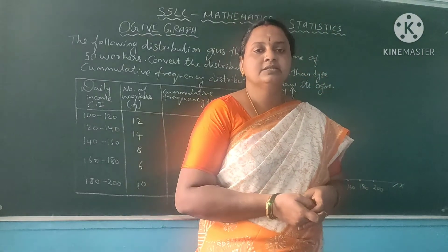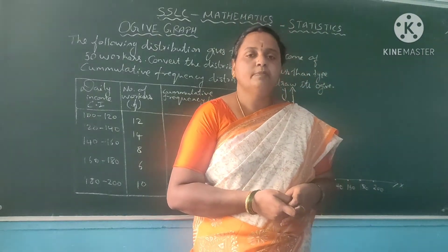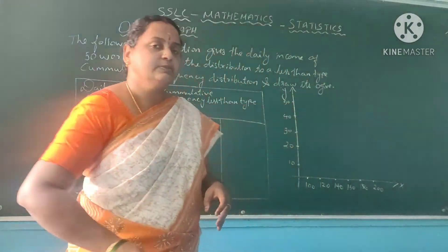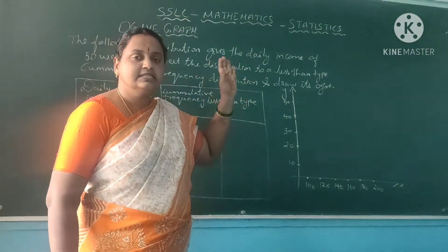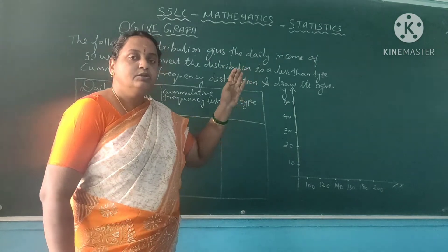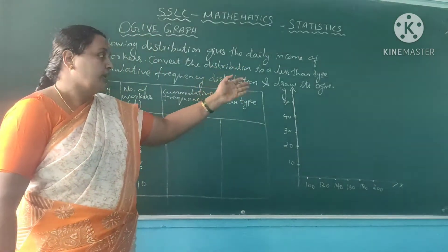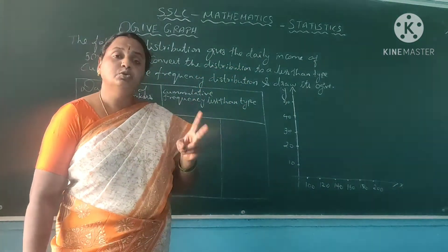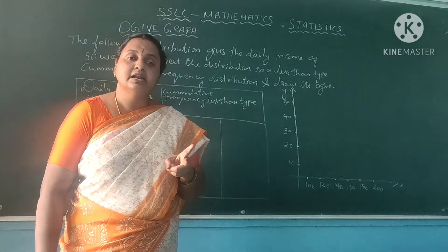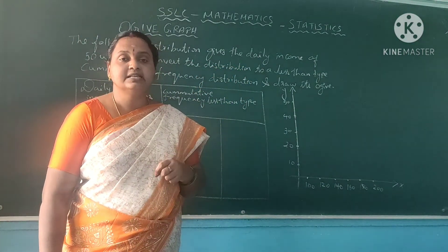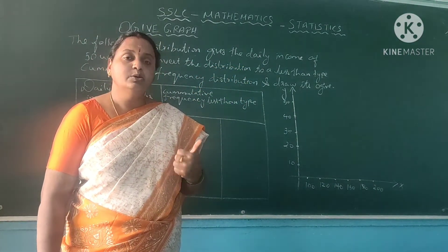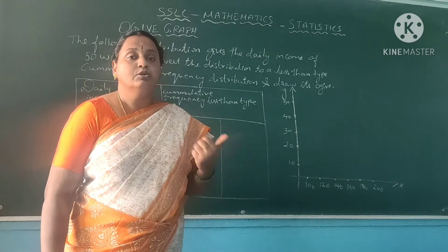Welcome back to my class. Today's topic I am going to explain is the statistics chapter to draw a walker graph. There are two types of walker graph — one is less than, and another one is more than.